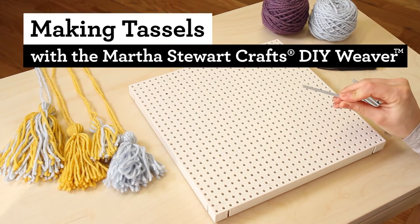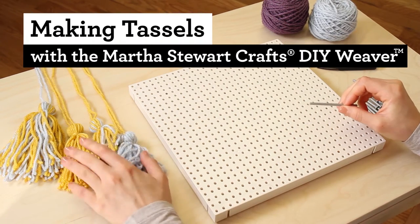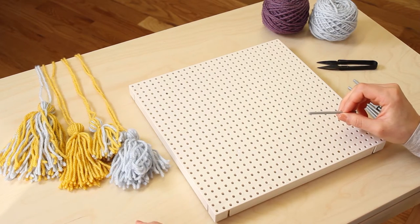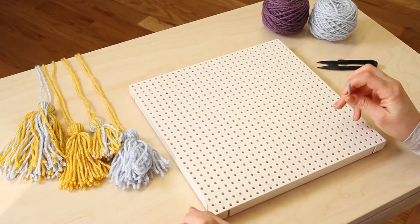Tassels are fun and easy to make with a DIY weaver. You can add them anywhere. You can use any Lion Brand yarn to make tassels and I'm using Vantage Choice.